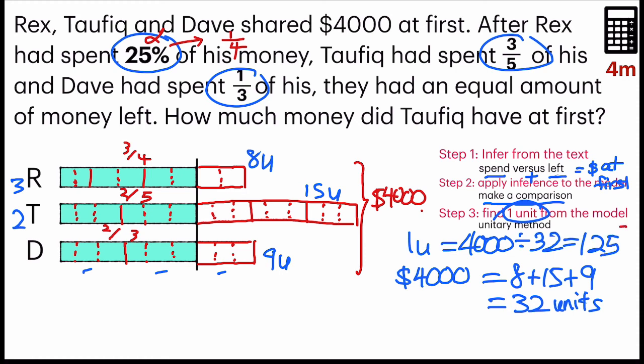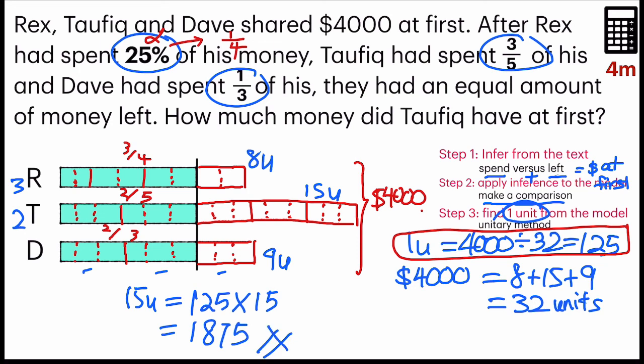This is the most important step. A combination of using unitary method to solve. Now, going back to the question, how much money did Taufik have at first? Let's take a look at Taufik's model. He had 15 units at first. So, the final step is to find 15 units. Since we have found 1 unit, that's 125. 125 times 15. I will get $1,875. And that's my answer. That's it.